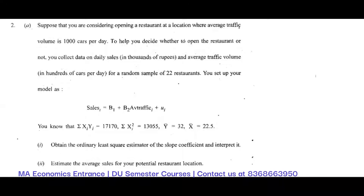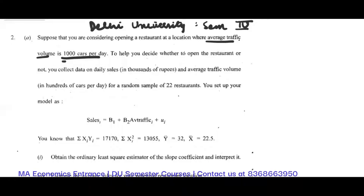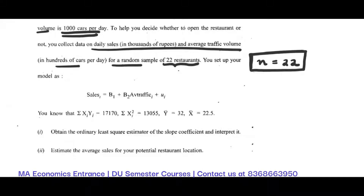Hello everyone, this is a past year question of basic econometrics or introductory econometrics, Delhi University, for students of semester four. The question says: suppose you are considering opening a restaurant at a location where average traffic volume is 1000 cars per day. You collect data on daily sales and average traffic volume for a random sample of 22 restaurants, so n is 22. Remember, because n is less than 30, if you have to do hypothesis testing it would be a t-test.